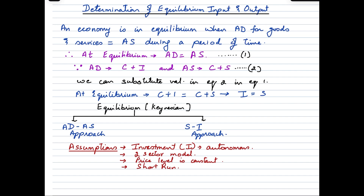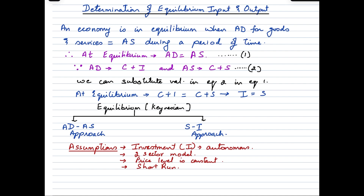Since we are studying the two-sector model, AD has only two components: consumption expenditure and investment expenditure. Aggregate supply, which is necessarily the national income of the economy, comprises consumption and savings. Substituting these into the equation gives us: AD = C + I equals AS = C + S. Striking off C from both sides, we are left with Investment equals Savings.